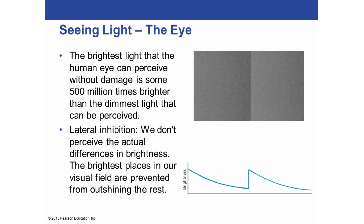The brightest light the human eye can perceive without damage is about 500 million times brighter than the dimmest light perceivable. Through lateral inhibition, we don't perceive the actual difference in brightness directly — the brightest places in our visual field are prevented from outshining the rest. You can see this in the picture: with a dividing line, you clearly see the distinction between two colors, but remove that line and it's hard to tell whether the two boxes differ in brightness.